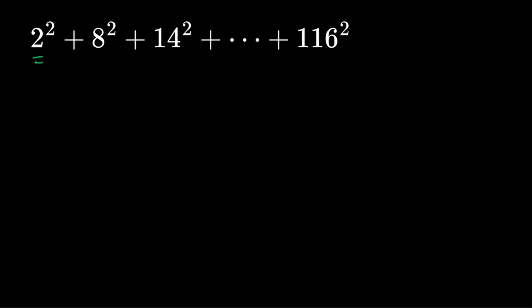Well, we know they're squares, but let's just take a look at the numbers we're squaring. So 2, 8, 14, all the way until 116. Now, you know, this is a very familiar pattern. It's just an arithmetic sequence, so we have a common difference of 6.